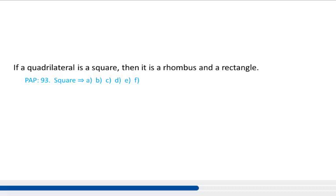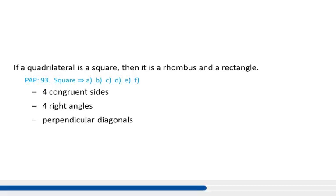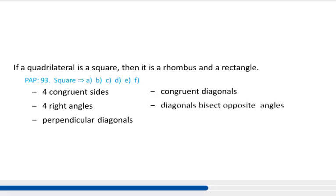Now let's talk about squares. If a quadrilateral is a square, then it is a rhombus and a rectangle. That means it has all of the properties of both: 4 congruent sides, 4 right angles, perpendicular diagonals, congruent diagonals, and diagonals that bisect the opposite angles.